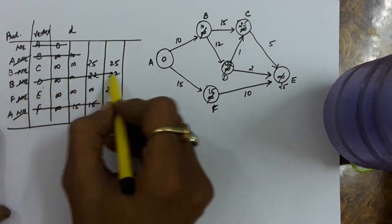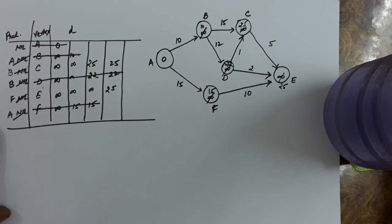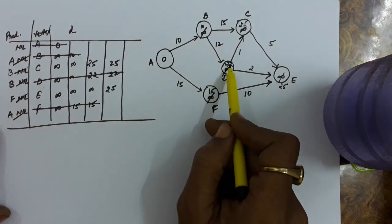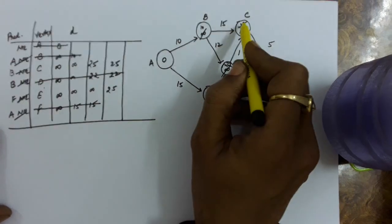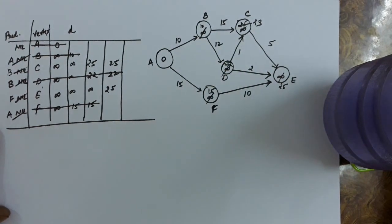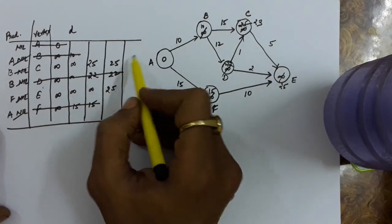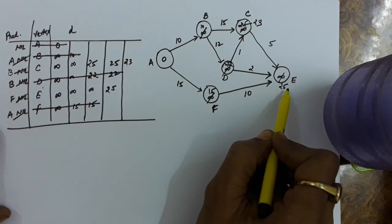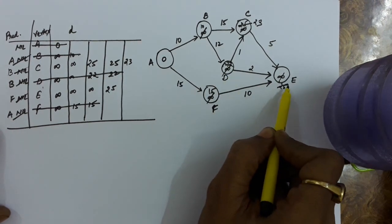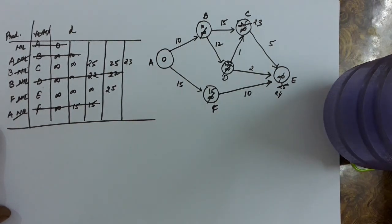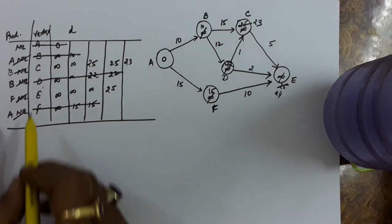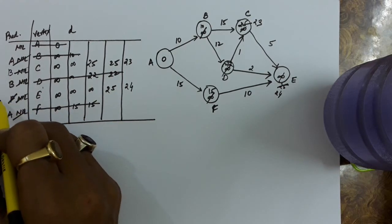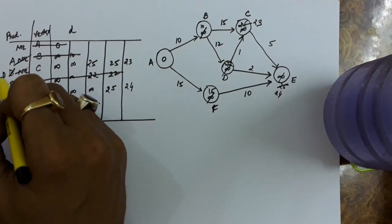Now the minimum is vertex D with distance 22. We explore vertices going from D. D to C has cost 1, so 22 plus 1 = 23. The earlier distance is 25, and 23 is less than 25, so it will be updated as 23. From D to E: 22 plus 2 = 24. Since 24 is less than 25, the distance of E will be updated as 24. The predecessor of E will be updated as D, and the predecessor of C will also be updated as D.